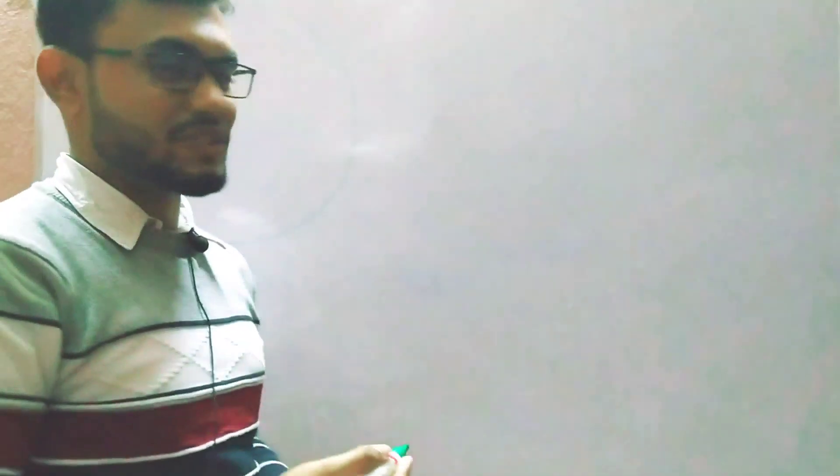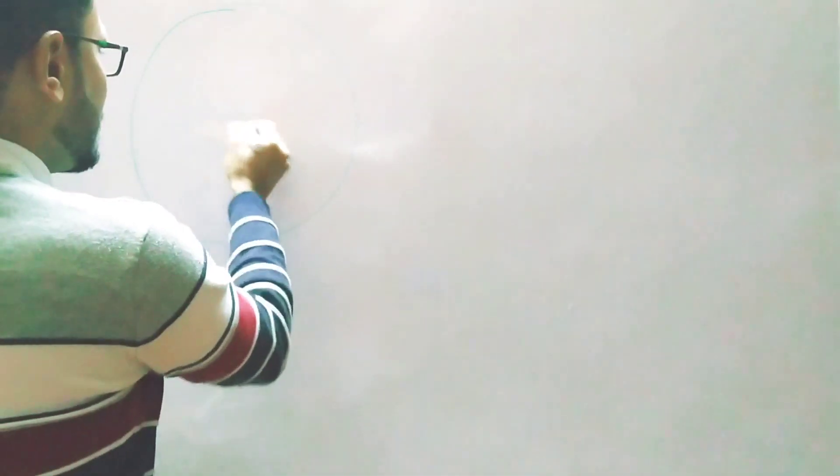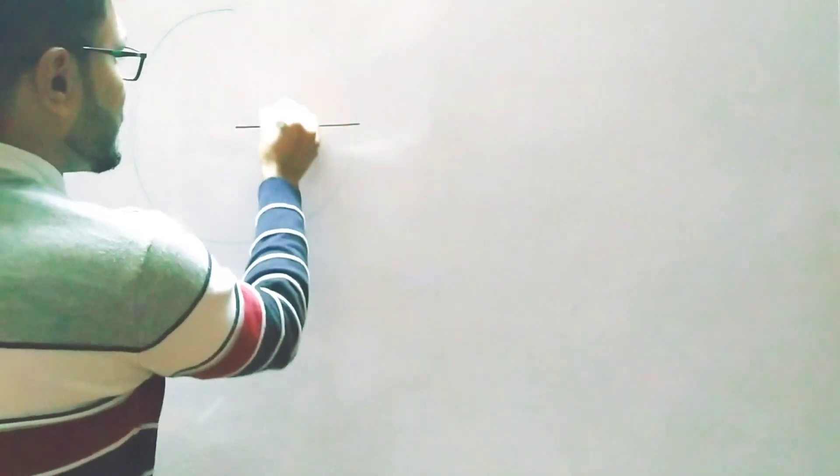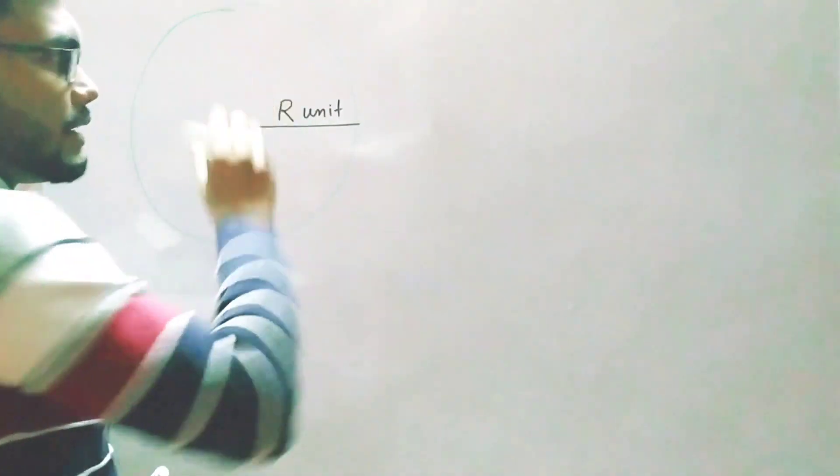Suppose I am taking here one circle. I'm drawing by hand so it's not looking like a proper circle. Suppose this is a circle with radius r. I am taking this one as center and this as r, with r unit.